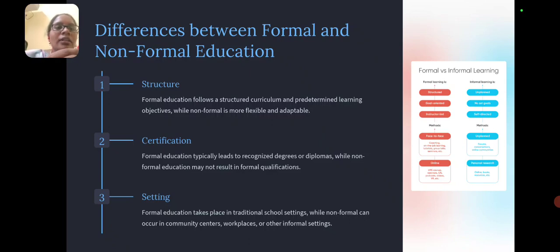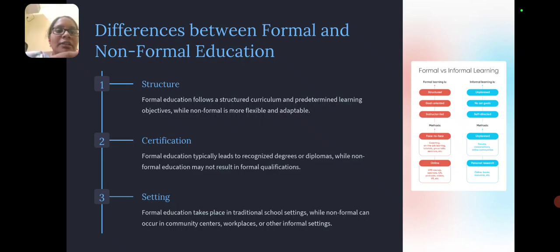Differences between formal and non-formal education include structure, certification, and setting. Formal education follows a structured curriculum with predetermined learning objectives, while non-formal is more flexible and adaptive. Formal education typically leads to recognized degrees or diplomas, while non-formal education may not result in formal qualifications. Formal education takes place in traditional school settings, while non-formal can occur in community centers, workplaces, or other informal settings.